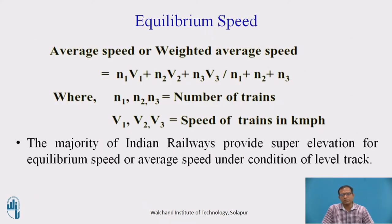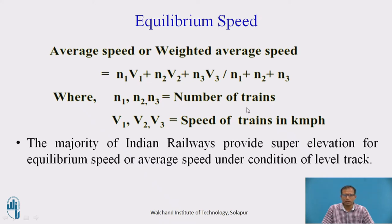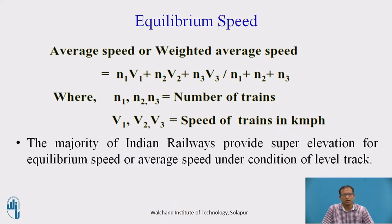What speed do we consider for calculating equilibrium speed or equilibrium cant? It is the average speed or weighted average speed, considering all kinds of vehicles. N1 indicates low speed, N2 indicates high speed, and N3 indicates medium speed. N1, N2, N3 are number of trains and V1, V2, V3 are speeds of the trains in kmph. For the majority of Indian Railways, the equilibrium speed or average speed is used, and the suggestion is taken from the chief engineer or track engineer who designed the track.